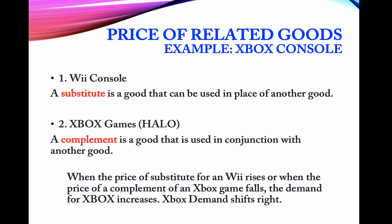Let's take the example of video game consoles — the Wii and the Xbox. These two products are substitutes: either we can use the Wii console or we can use the Xbox. If the price of the Wii falls, people are more likely to buy the Wii, and the demand for Xbox would fall.